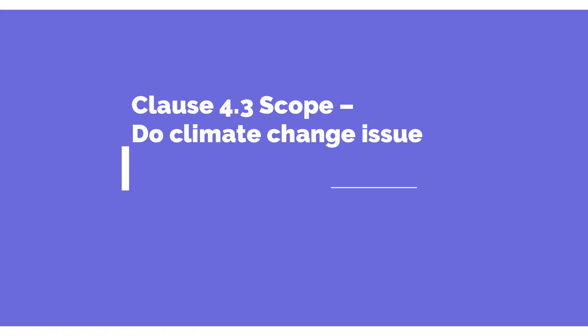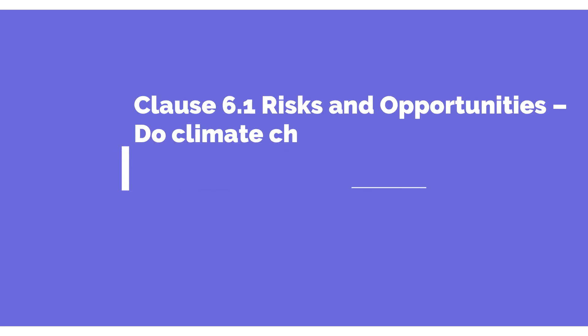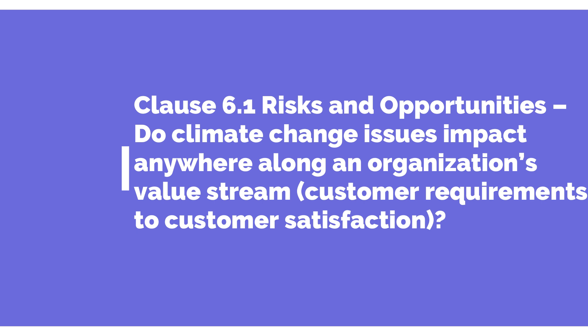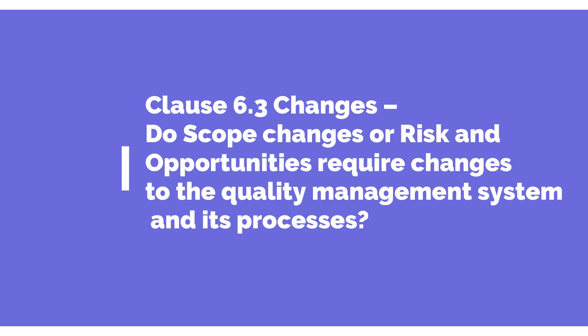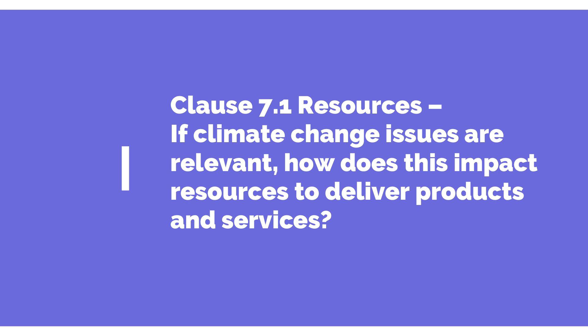Let me share some examples. Clause number 4.3, talking about scope, may result in some changes in the scope or application of some requirement. Then the logical output of clauses 4.1 and 4.2 is clause number 6.1, talking about risk and opportunity — what are the possible risks and opportunities with respect to climate change applicable to the organization. Clause number 6.3 covers changes in the management system and its processes driven by scope changes or risk and opportunities. Clause number 7.1, talking about resources, addresses how climate change is going to impact the resources needed to deliver products and services.